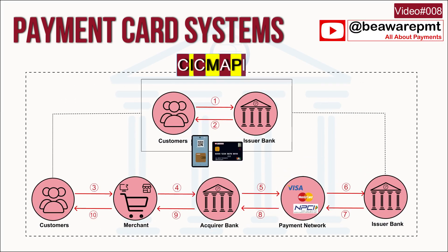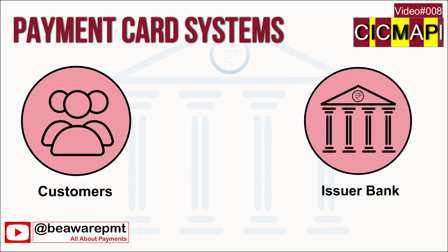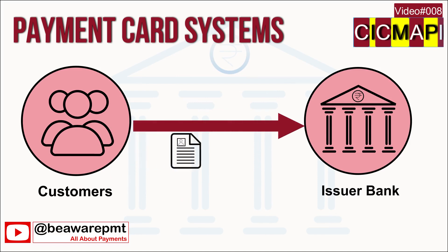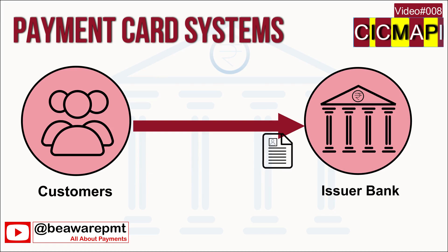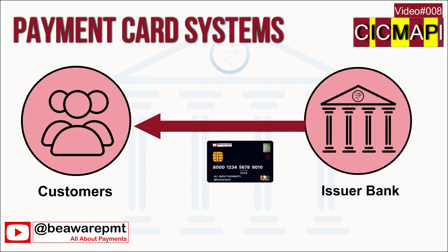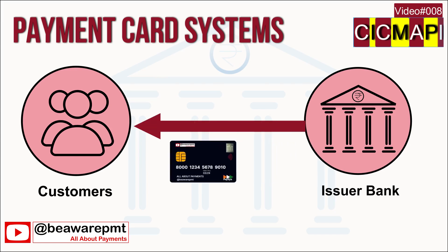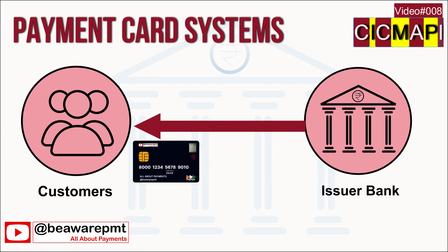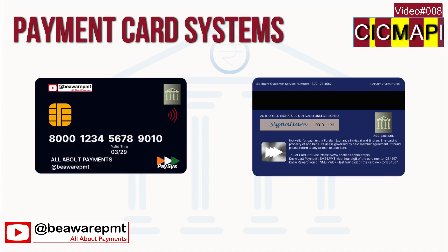Let's come to our current topic, which is the CIGMAPI model. A customer of a bank applies for the issuance of a card. The bank, which is the issuer bank, does due diligence and either issues the card or rejects the application. The card issued to the customer contains various details which we'll discuss at a later point.